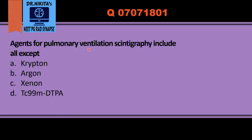The topic is agents for pulmonary ventilation scintigraphy — basically a ventilation-perfusion scan for the lung, that is a VQ scan. The main purpose of doing it is for the diagnosis of pulmonary embolism. We use various radioisotopes as agents for ventilation and for perfusion.